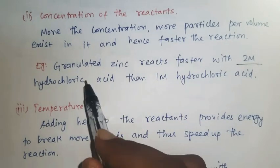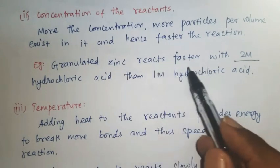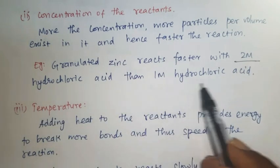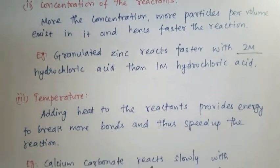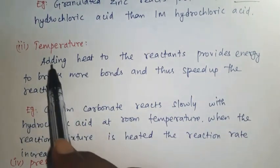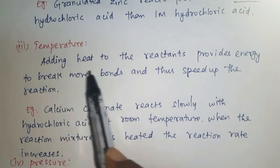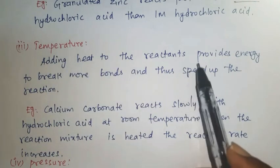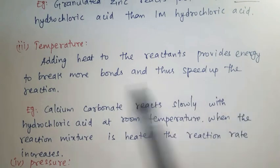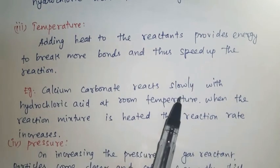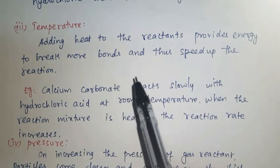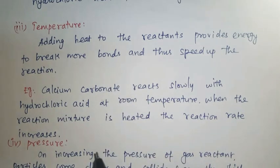Granulated zinc reacts faster with 2 mol hydrochloric acid than with 1 mol hydrochloric acid. Third factor: temperature. If we increase the heat to the reactants, it provides energy to break more bonds and increases the speed of the reaction.